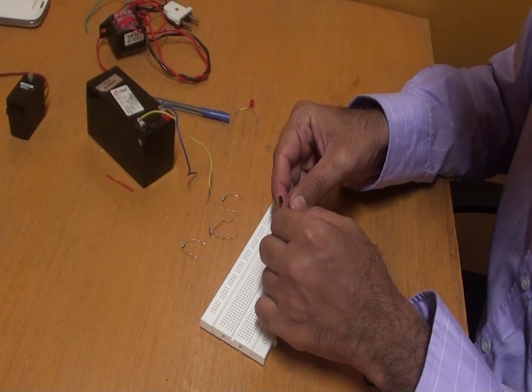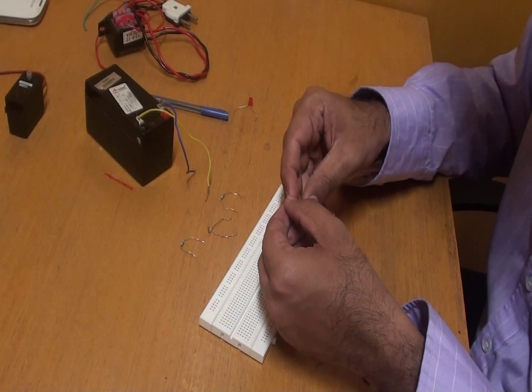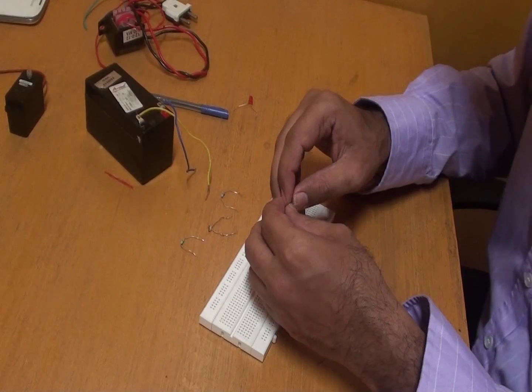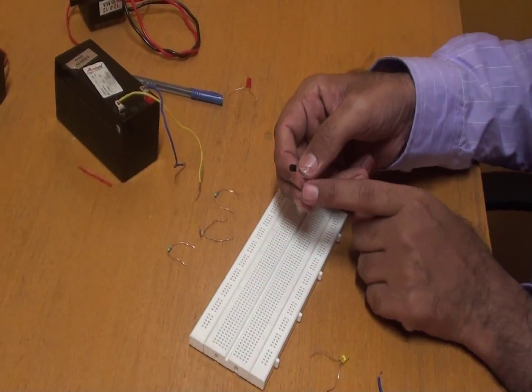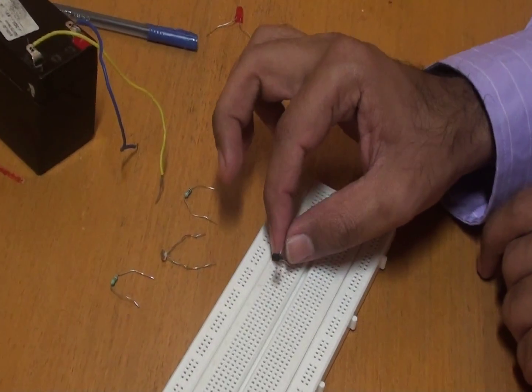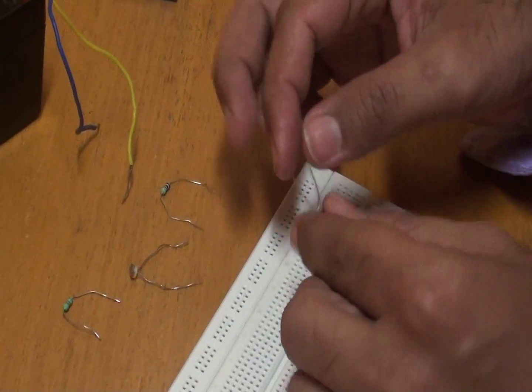Now we will be seeing a demonstration of a BC547 on how it works. So for this demonstration we will be using a BC547 transistor. As you can see here, a 3 pin as I explained before.